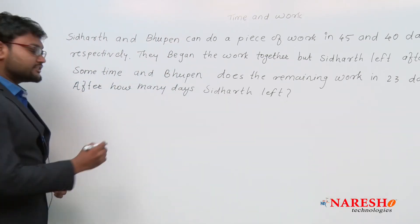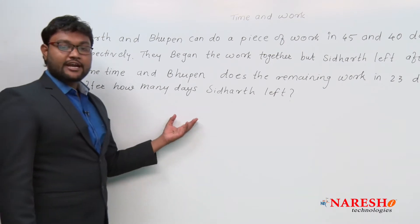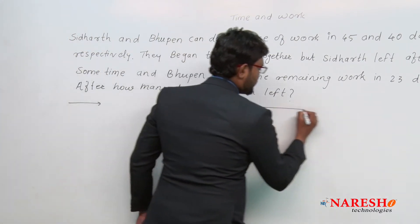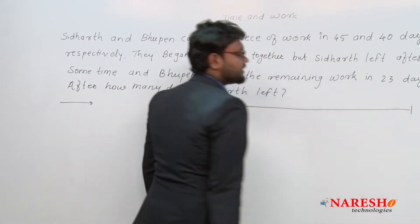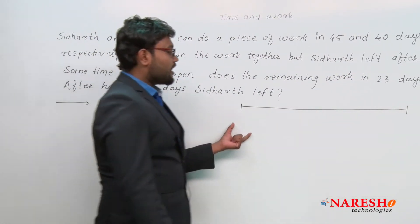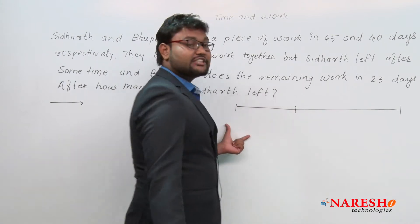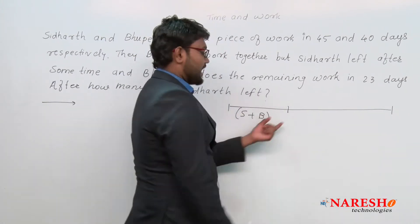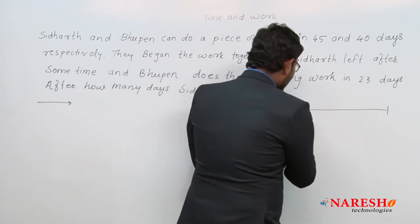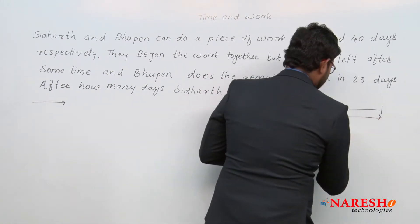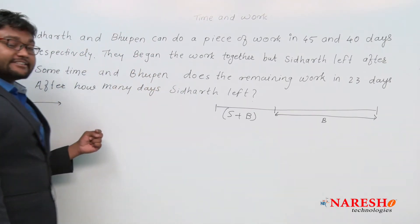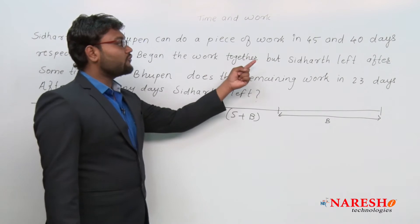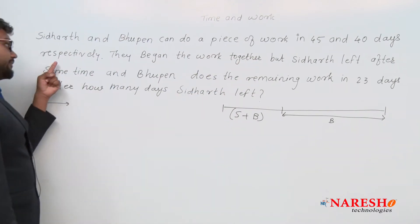For solving this kind of question, first of all for your understanding I am making a work diagram. This shows the complete working days of Siddhartha and Bhupen. Up to a certain duration of time, both were working together, and after that only Bhupen worked. It is clearly mentioned that Siddhartha and Bhupen can do a piece of work in 45 and 40 days respectively.